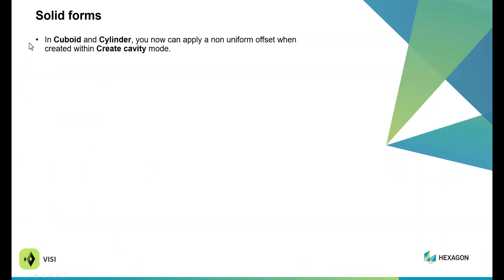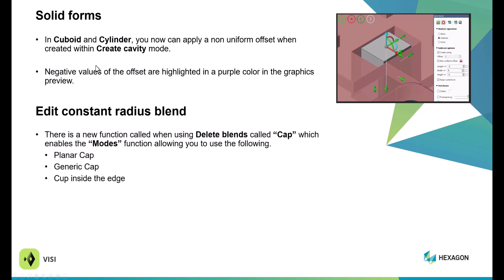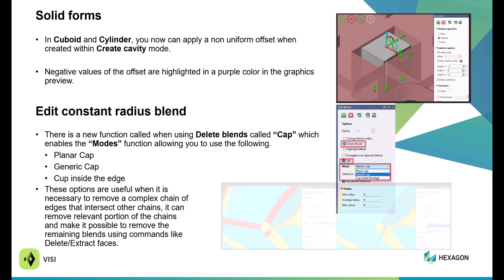Within solid forms, in Cuboid and Cylinder, you can now apply a non-uniform offset when creating cavities, much like with Bounding Box. You can add negative values to the offset and highlight the offset within purple areas in the graphic pane. Within Edit Constant Radius Blend, there is new functionality to delete the blend and place a cap on top. Within this cap area, enabled modes include Planner Cap, Generic Cap, and Cap Inside of Edges. These options are useful for fixing a complex chain of blends.